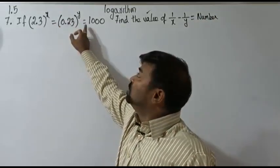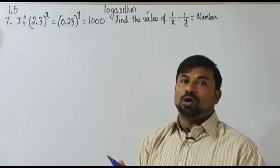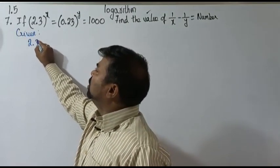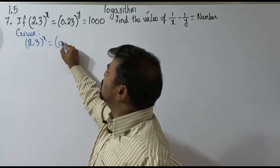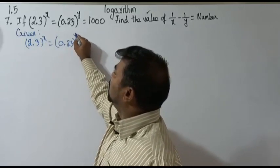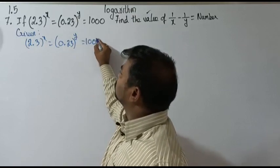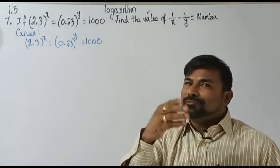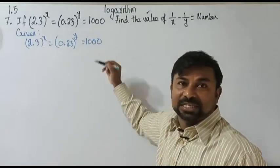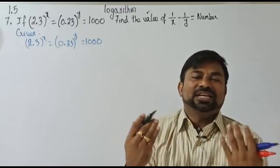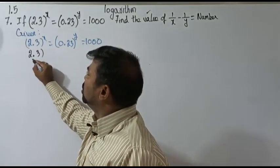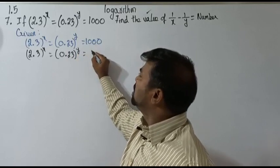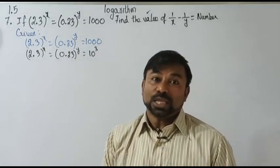Please remember we are having two variables — stressing on that. So given: I like to write 2.3 whole to the power x, equal to 0.23 whole to the power y, equals 1000. My logic is: the thousand present here — in terms of power, can I write this as 2.3 whole to the power x equals 0.23 whole to the power y equals 10 to the power 3.